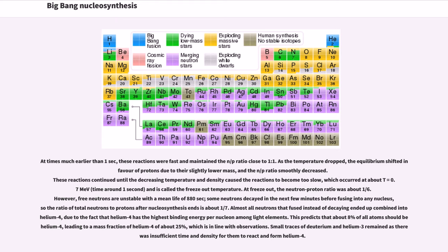At freeze-out, the neutron-proton ratio was about one-sixth. However, free neutrons are unstable with a mean life of 880 seconds. Some neutrons decayed in the next few minutes before fusing into any nucleus, so the ratio of total neutrons to protons after nucleosynthesis ends is about one-seventh.